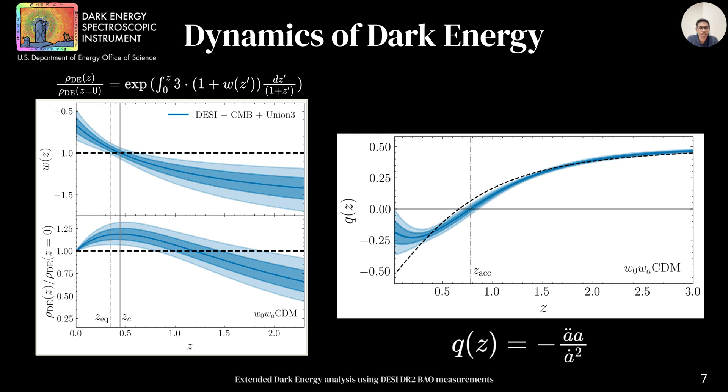Next, we show the deceleration parameter q that indicates how acceleration rate of the universe has been changing with redshift. The dotted vertical line around z equals 0.8 marks the point when the universe started accelerating. The evolving dark energy indicates the cosmic acceleration started earlier than predicted by lambda CDM. However, in the present epoch, this acceleration rate appears to be slowing down.